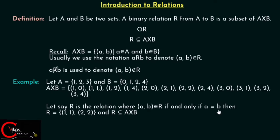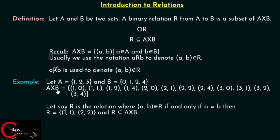This means we include only those ordered pairs where a is equal to b, that is, where the first element is equal to the second element. So R equals the set {(1,1), (2,2)}. You can clearly see this R is a subset of A cross B because it is derived from A cross B.